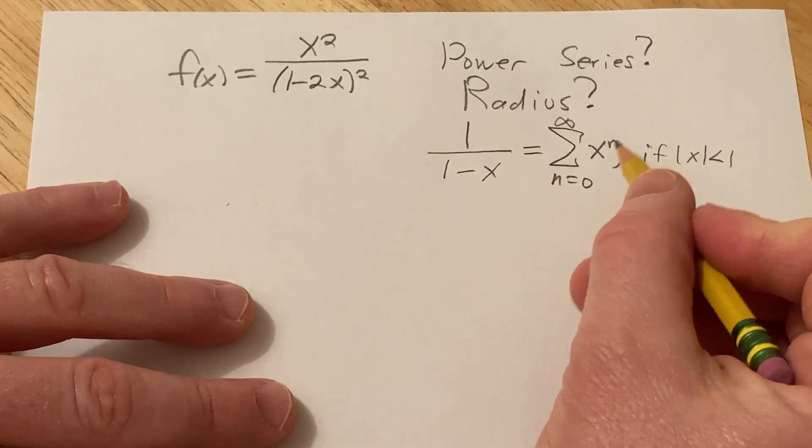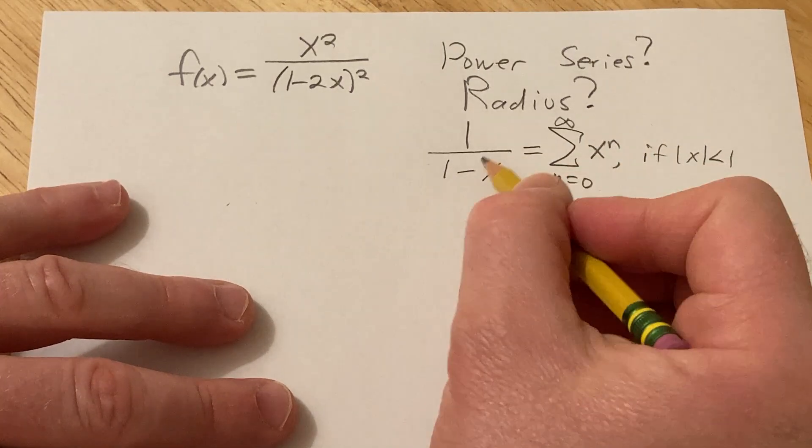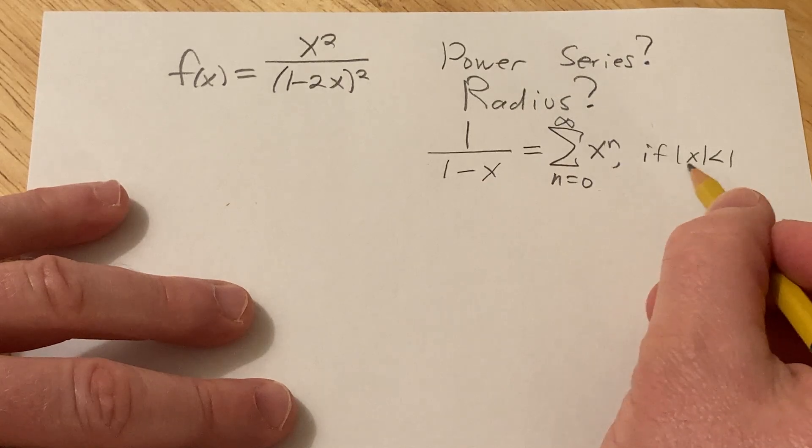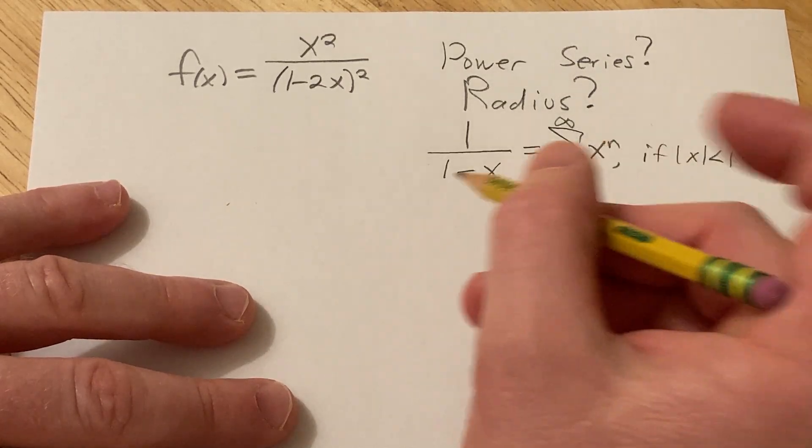And this equation is true if the absolute value of x is less than 1. This is basically just saying that this geometric series converges to 1 over 1 minus x whenever the absolute value of x is less than 1.